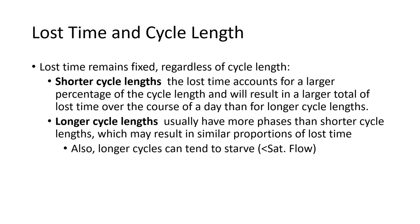Yellow time and all-red time are set values for a given intersection and don't change. During shorter cycle lengths, lost time represents a larger proportion of the cycle; during longer cycle lengths, it's a smaller proportion. That's one reason some people like longer cycle lengths — as a proportion of the total cycle, there is less lost time.